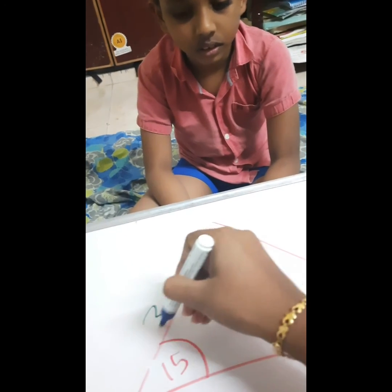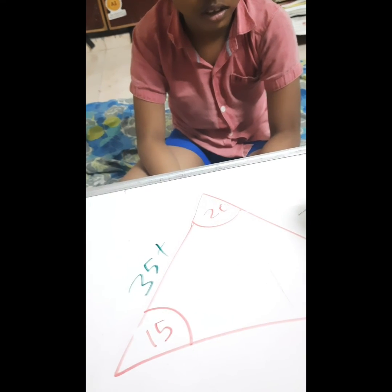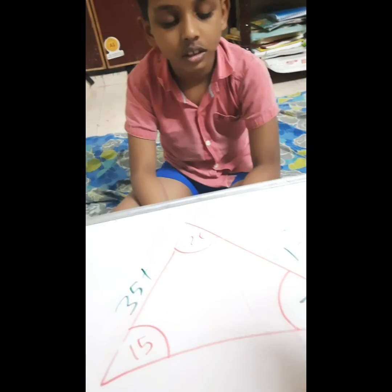35. Very good! So same color you have to do addition, different color you have to do subtraction. Okay, got it?